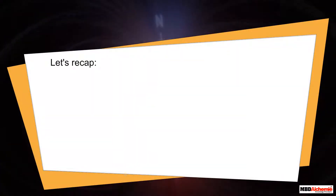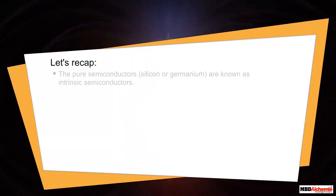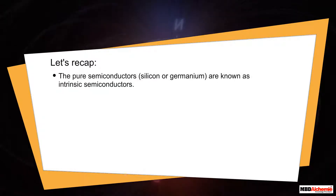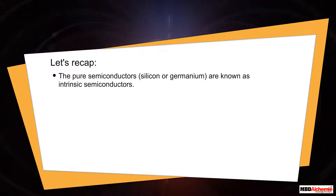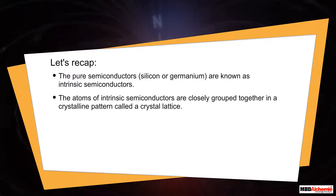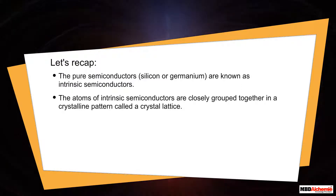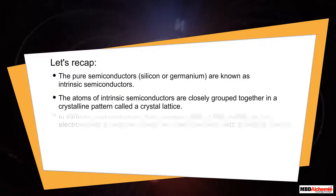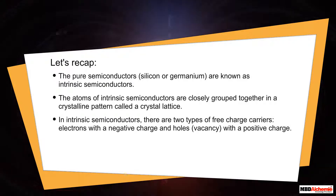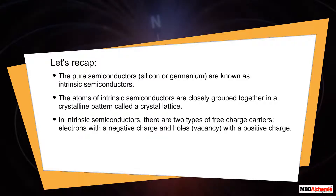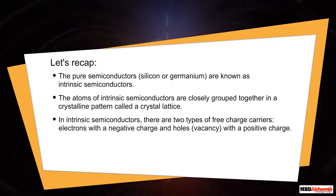Let's recap. The pure semiconductors silicon or germanium are known as intrinsic semiconductors. Their atoms are closely grouped together in a crystalline pattern called a crystal lattice. In intrinsic semiconductors there are two types of free charge carriers: electrons with a negative charge and holes — vacancies with a positive charge.